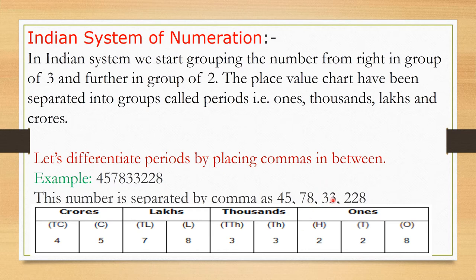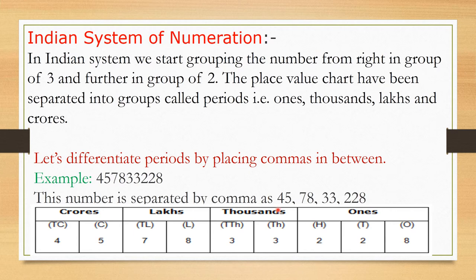After completing the thousands period, place a comma. Moving left, 8 comes at the lakhs position and 7 at the ten lakhs position, completing the third period. Place a comma, then move to the crores period: 5 comes at the crores place and 4 at the ten crores place, completing the fourth period. This number is read as 45 crores, 78,33,228.